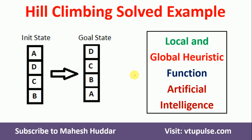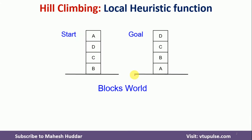We take this example where we have four blocks A, B, C, D. We want to go from this particular initial state or start state to this particular goal state, where A should be present on the ground, B on top of A, C on top of B, and D on top of C.